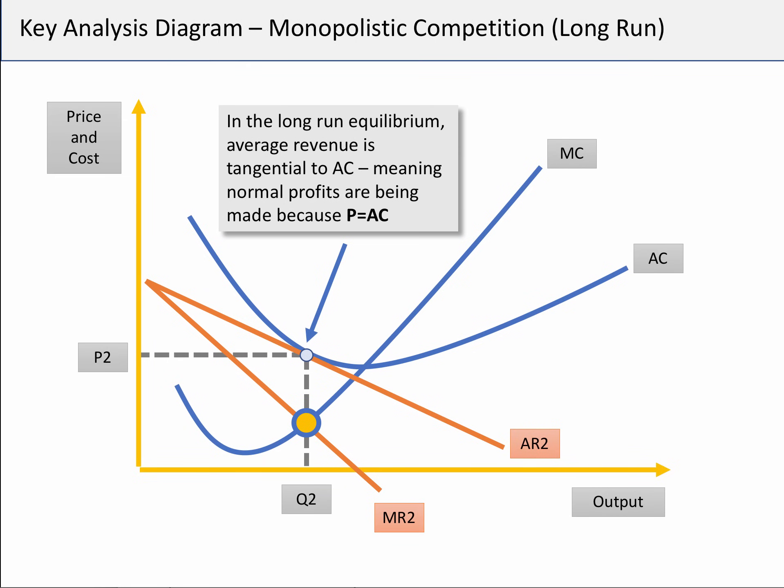Here's a good analysis diagram you could be using. Here's the monopolistic competition diagram in the long term, where the entry of new firms and new products competes the profits away. At the equilibrium output Q2, only normal profits are made.